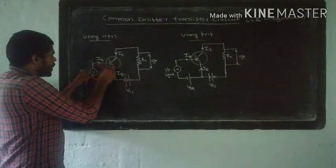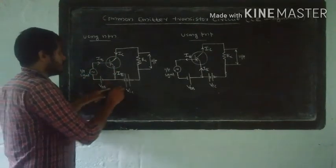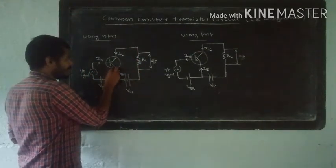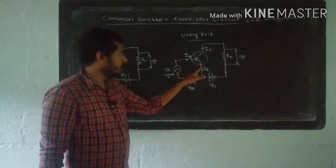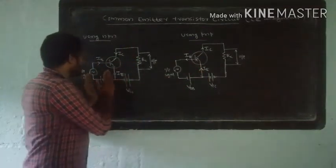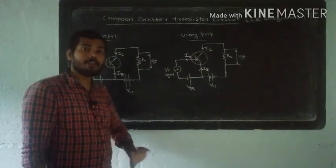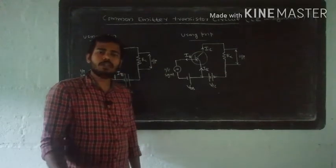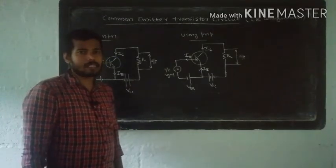The input section is the base-emitter junction, and this is the output section. The emitter terminal of the transistor is common to both input and output sections. That configuration is known as Common Emitter Transistor Configuration.